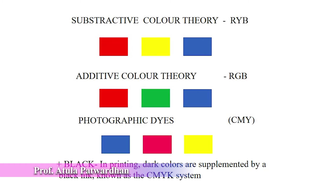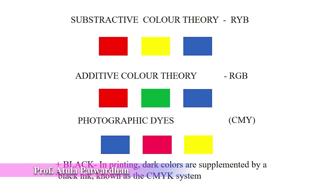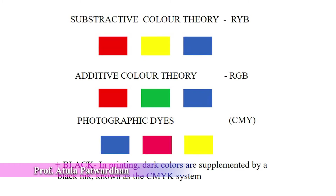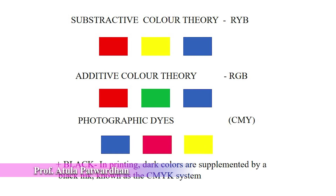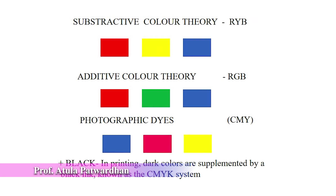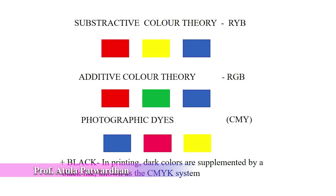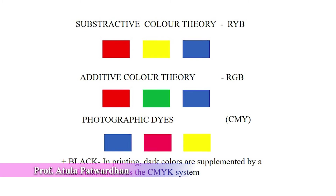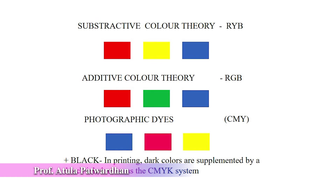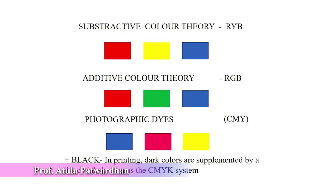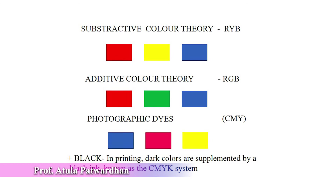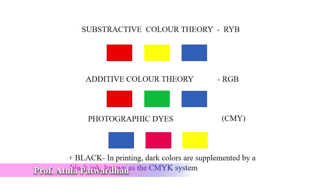There are some photographic dyes which we use in printing. In printing, those are C, M, Y plus black — that is cyan, magenta, and yellow, with the addition of black. Dark colors are supplemented by a black ink, known as the CMYK system.